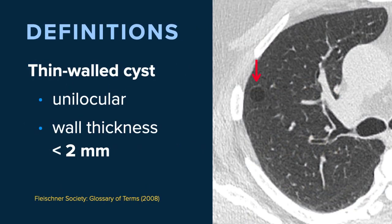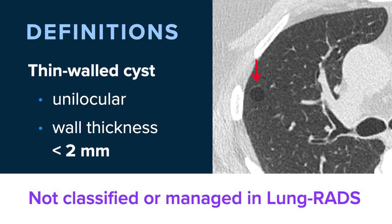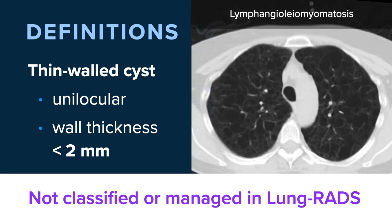In order to help standardize communication and classification, Lung RADS 2022 introduces some definitions in relation to atypical pulmonary cysts. Starting out, let's define thin-walled cysts. A thin-walled cyst is unilocular with a wall thickness that's less than two millimeters — often the wall will be imperceptible. Thin-walled cysts are not classified or managed in Lung RADS. Cysts may be solitary, as we see in this example, or they can be a variable size, or numerous, as we see in this patient with lymphangiomyomatosis.